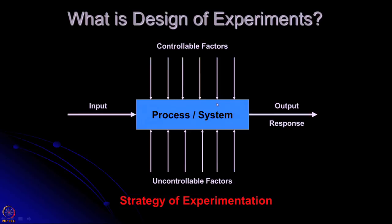Is any experiment amenable to design of experiment? Well, the answer is not always. When is it possible? Suppose you have a system or a process in which a material input is given and another material output comes out. This process is controlled by many factors. We can divide them into two kinds: controllable factors and uncontrollable factors.